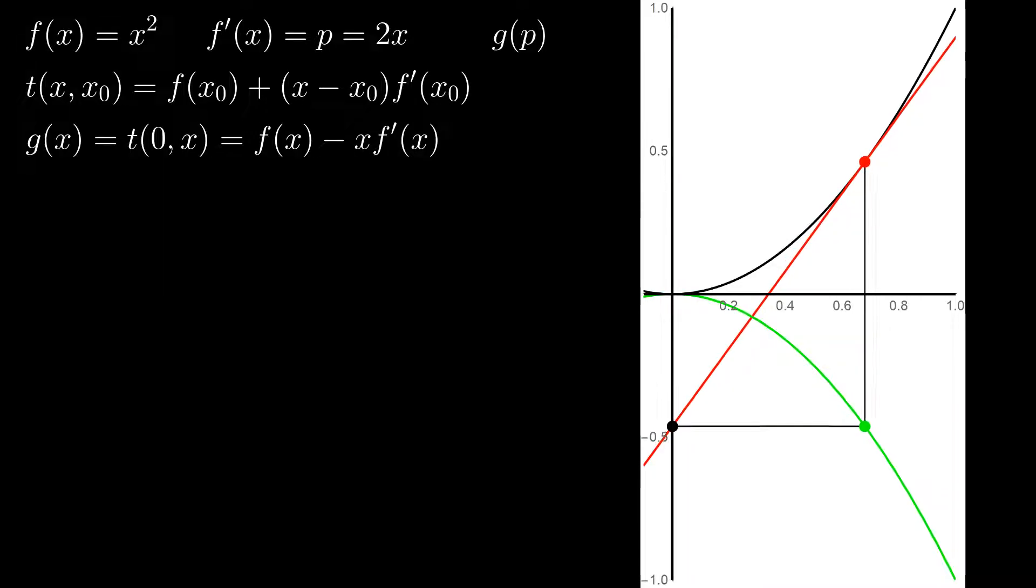And, of course, from all tangents available, we use the one that touches f at the exact x-coordinate that we're currently looking at. So, g of x equals t of 0 and x, since we evaluate on the y-axis, and x0, which I use to denote the point at which a tangent is constructed, is now our variable x. This equals to f of x minus x times p.